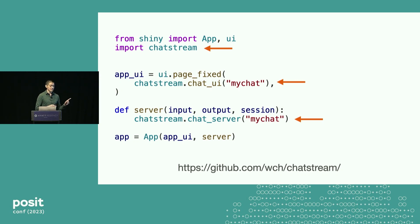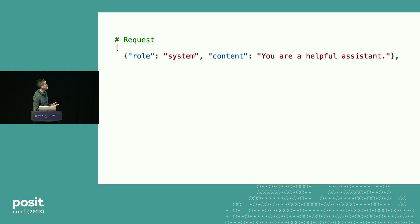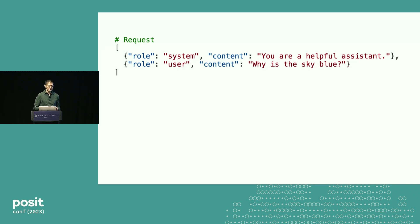Before we do more interesting things, it's useful to understand how it talks to the OpenAI API. When you ask it a question, it makes a request to the API, and that request is just some JSON that contains text. It has a message part that says role: system, content: "you are a helpful assistant" — that is the system prompt, which is normally hidden from users. And then there is the actual question: role: user, "why is the sky blue?"